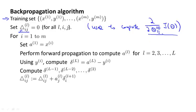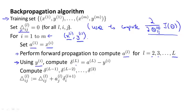Next, we loop through our training set: for i equals one through m. For the i-th iteration, we work with training example xi, yi. We set a1, the activations of the input layer, equal to xi, the input for our i-th training example. Then we perform forward propagation to compute the activations for layer 2, layer 3, and so on up to the final layer, capital L. Next, we use the output label yi to compute the error term delta L for the output layer: delta L equals what our hypothesis output minus the target label. Then we use the backpropagation algorithm to compute delta L minus 1, delta L minus 2, and so on down to delta 2. There is no delta 1 because we don't associate an error term with the input layer.